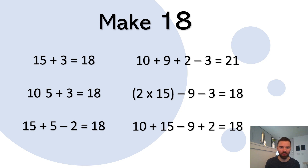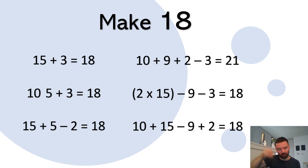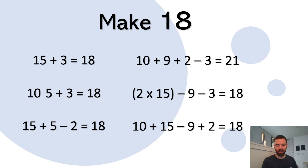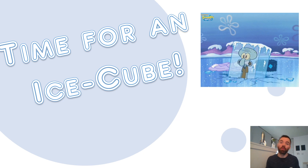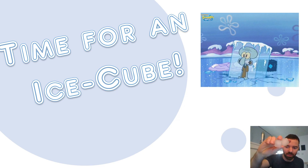Those are quite challenging solutions. I think the second one's meant to be ten add five add three. Look at the one with brackets — the wee lines that go like that. Two times 15 is 30, take away nine, take away three. That's a clever way of doing it — I didn't think of that!